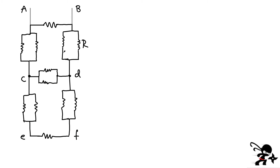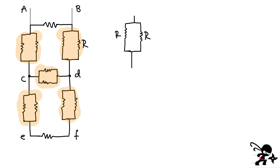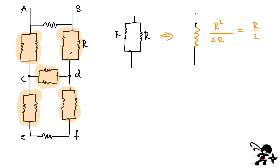Now I notice I have five combinations of two resistors each of value R in parallel. Two resistors R in parallel gives R×R / (R+R) = R/2. So each of those parallel pairs is equivalent to R/2. I have five such combinations, so I'll replace each with R/2.